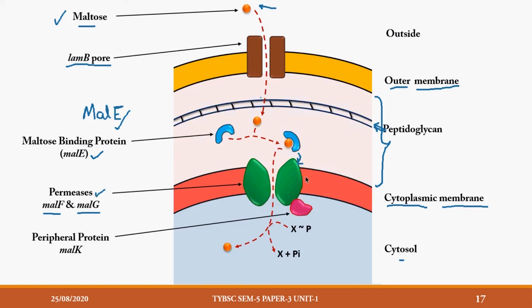These transporter proteins in the plasma membrane are called permeases, or integral proteins. The genes coding for these are malF and malG — these names are important, as exams may ask for them. There is also one more protein here, a peripheral protein coded by the gene malK. The MalK protein's exact role is not yet fully known, but transport does not take place without it.